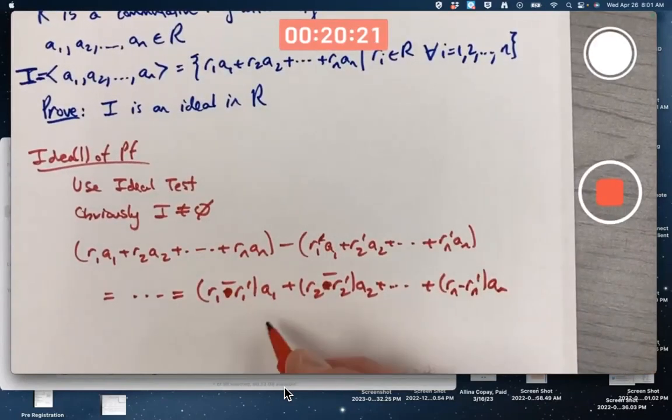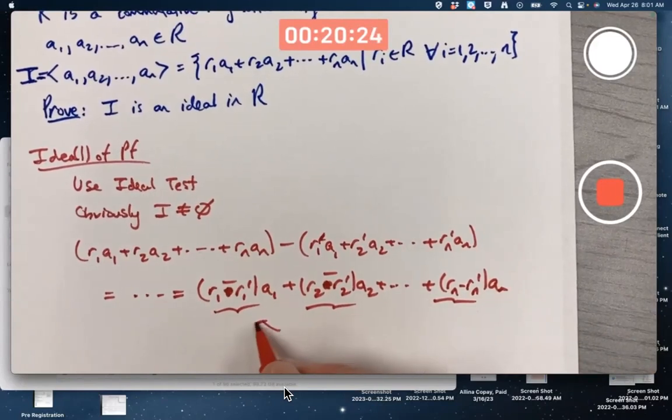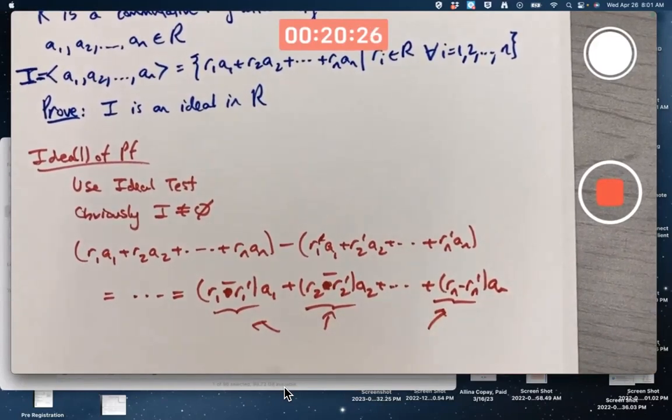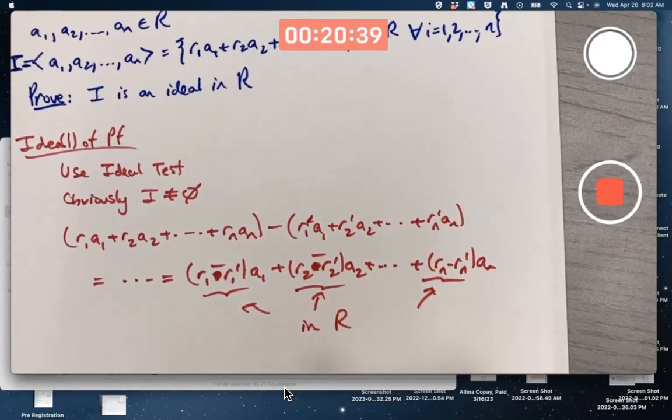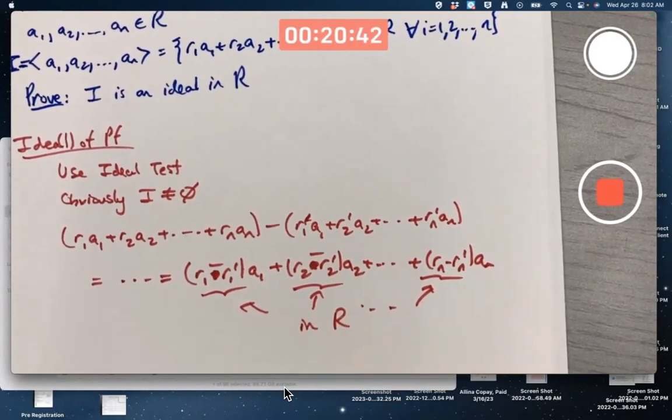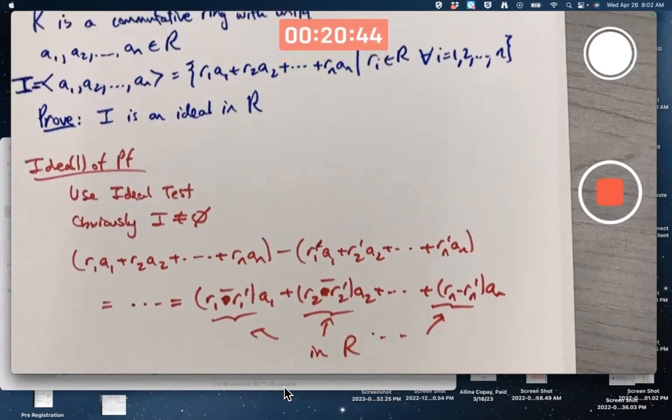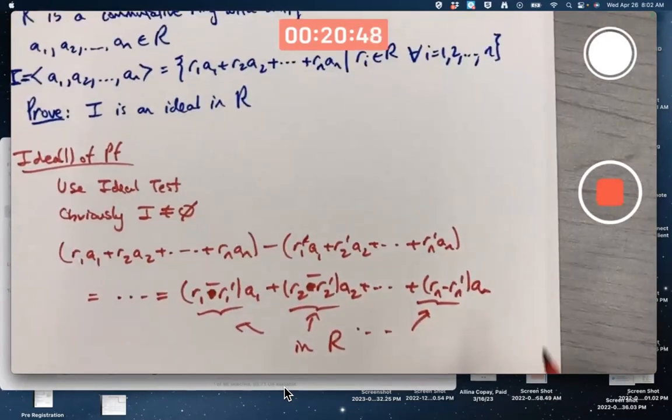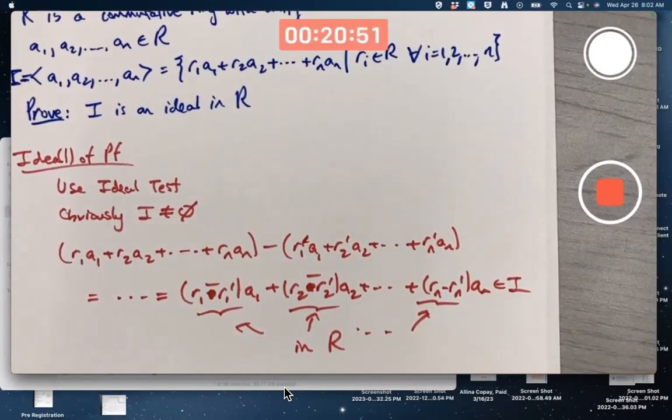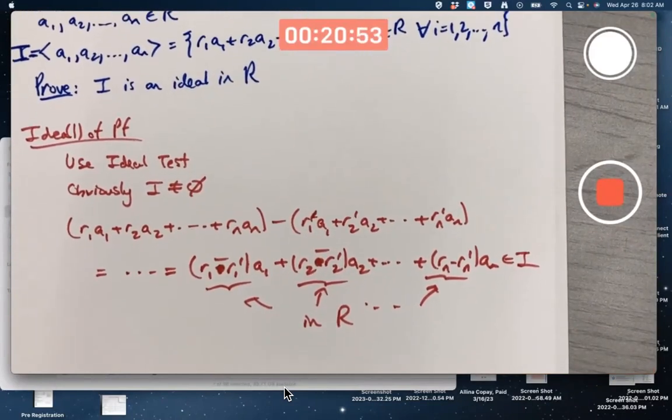Through Rn minus Rn prime times An. And each of these things, since a ring is a group under addition, and therefore, again, with subtraction, you're still going to have closure because subtraction means adding additive inverses. These are in R. Okay, so it's in the right form. It's in the form of a linear combination of A1 through An. So this is in I. That verifies closure under subtraction.